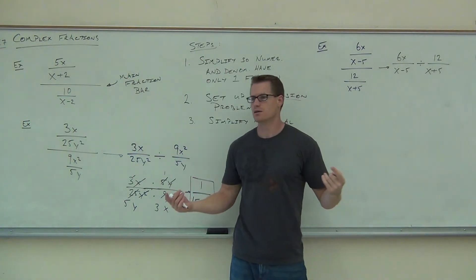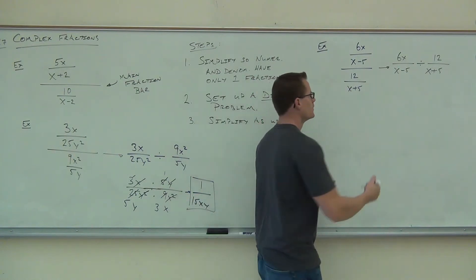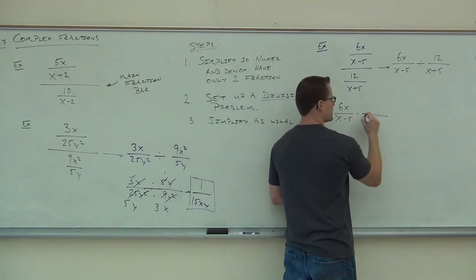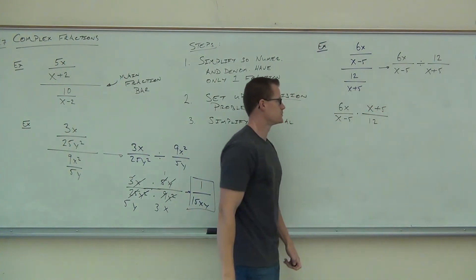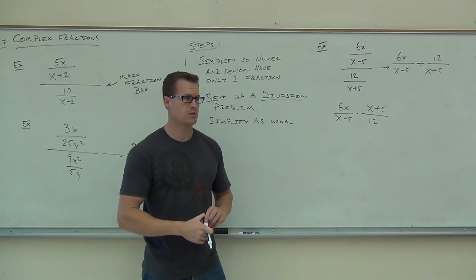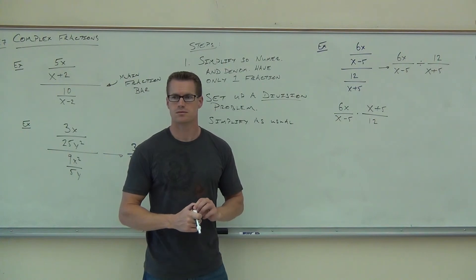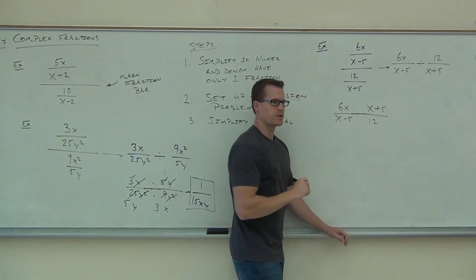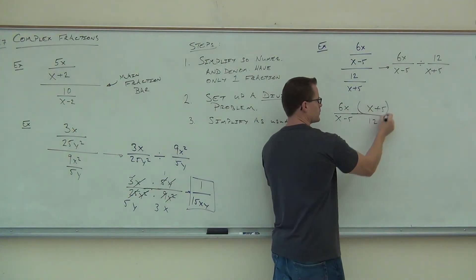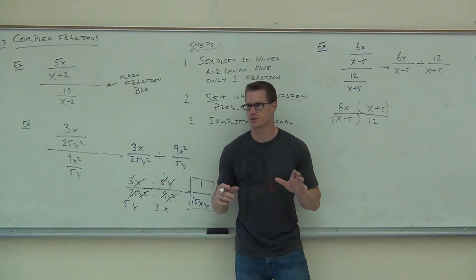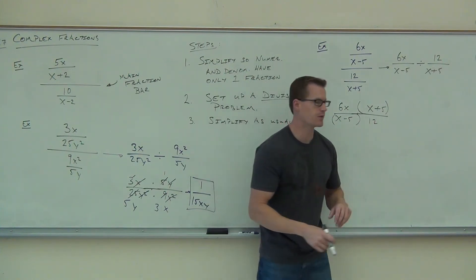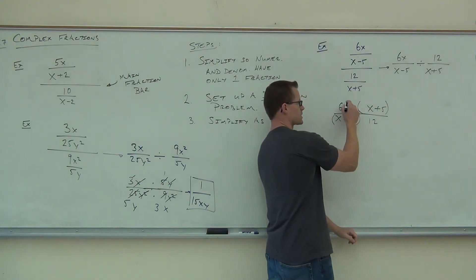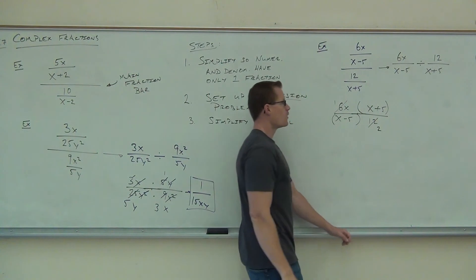Now that we have this division problem, how do we do division? The 6x over (x minus 5) stays the same. The division changes to multiplication, and the second fraction becomes (x plus 5) over 12. Before we simplify, we need to make sure there are parentheses around those binomials — we certainly don't want to distribute; we want to simplify. Does x minus 5 and x plus 5 simplify? No, they're not the same thing. What does simplify? 6 and 12 — so 6 becomes 1 and 12 becomes 2.